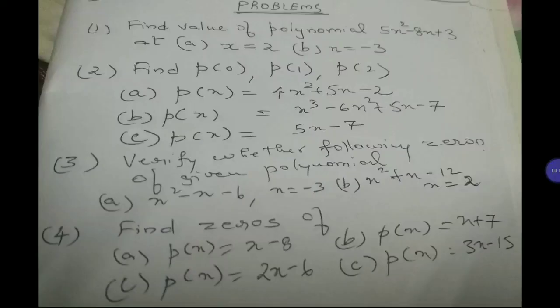Now let us work out some problems. Problem 1: find the value of the polynomial 5x² − 8x + 3 at (a) x = 2: substitute — 5(2)² − 8(2) + 3; and (b) x = −3: substitute — 5(−3)² − 8(−3) + 3 = 5(9) = 45 + 24 + 3. Work it out and post doubts in the comments.